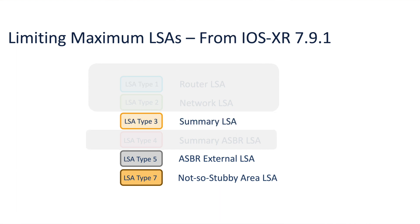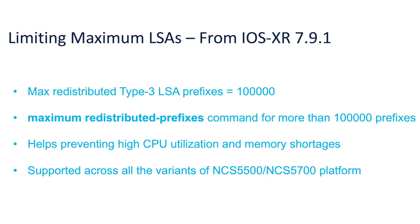Starting from 7.9.1, the maximum redistributed prefixes limit is also applied to the prefixes that are redistributed as type 3 LSAs. The maximum redistributed type 3 LSAs for a given OSPF process is limited to 100,000. If the router redistributes more than 100,000 prefixes as type 3, type 5, or type 7 LSAs, then you must configure a higher limit using the maximum redistributed prefix command. This helps in preventing high CPU utilization and memory shortages on the platforms.